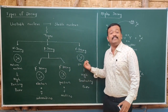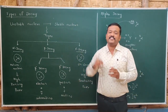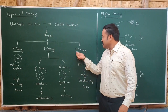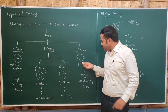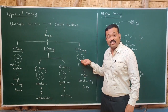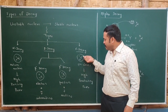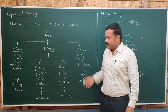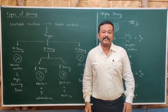If from an unstable nucleus electromagnetic radiation is emitted, then that decay is called gamma decay. Gamma radiations do not have any charge or mass. That is why we write gamma as having atomic number 0 and mass number 0. This type of decay is called gamma decay.